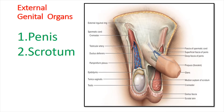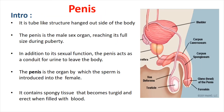Now we will see a cross-section of the penis. It is a tube-like structure that hangs outside of the body, and it is the male sex organ that reaches its full size during puberty.